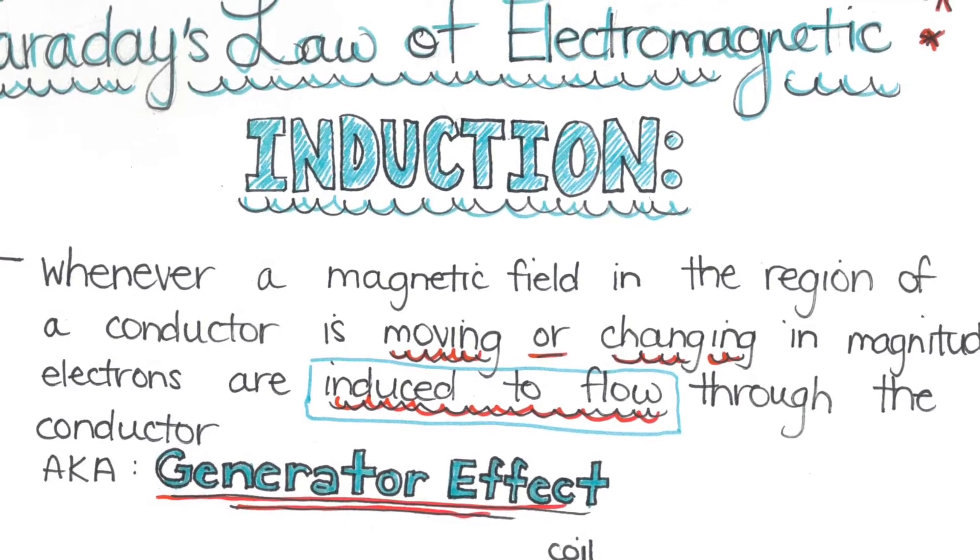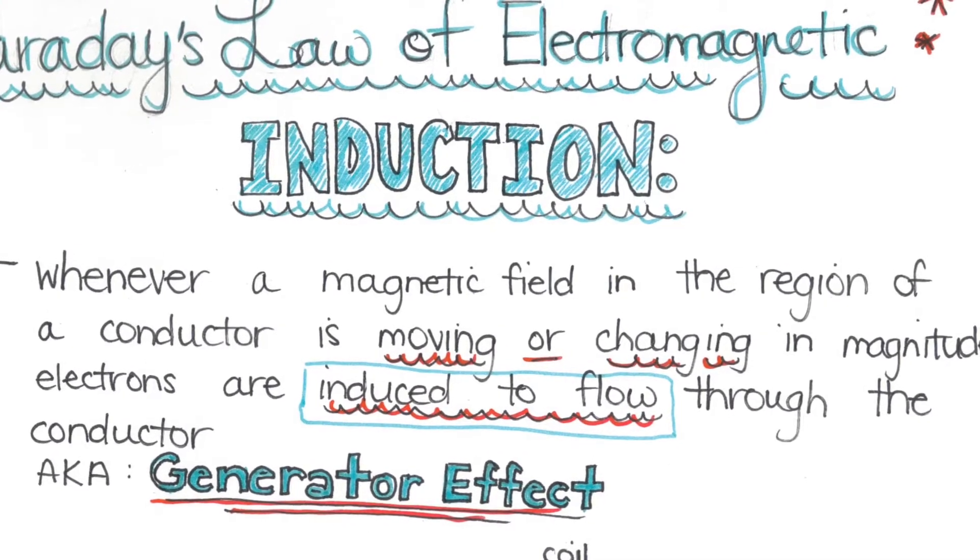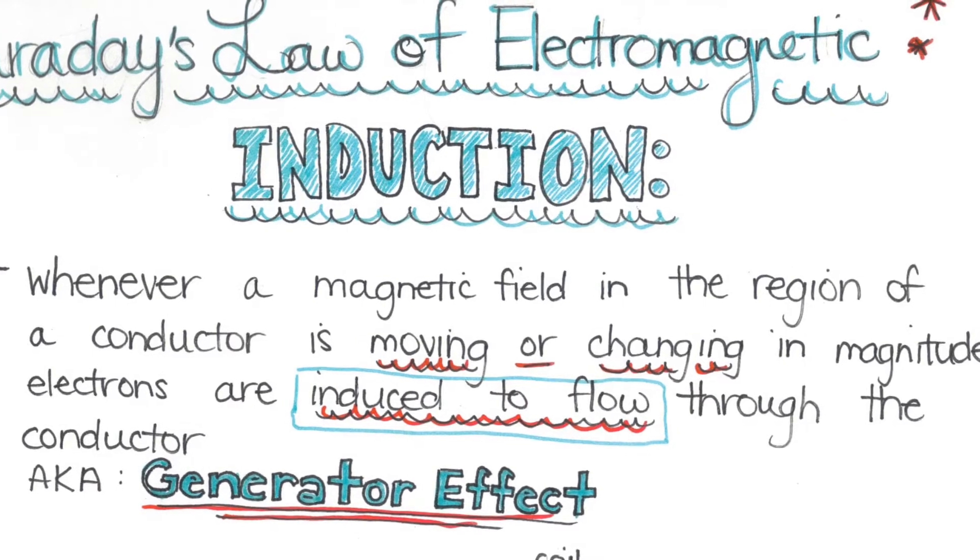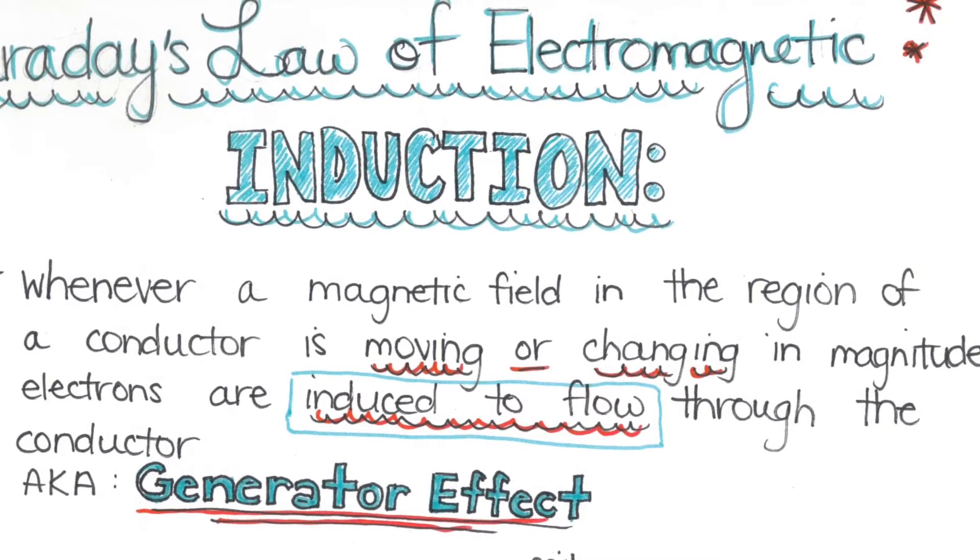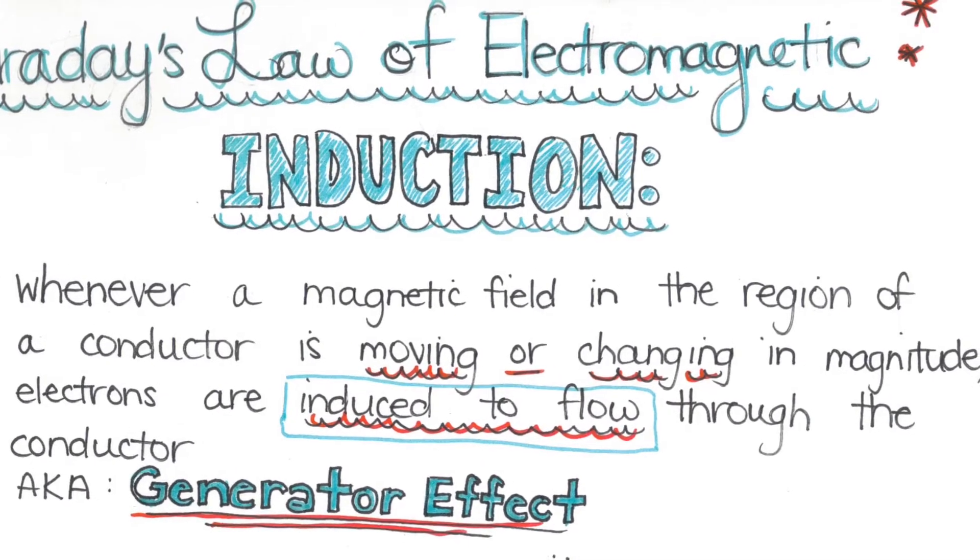This is also known as the generator effect. As you can see there, I've got a small diagram featuring a moving magnet, which induces electron flow in the coil.